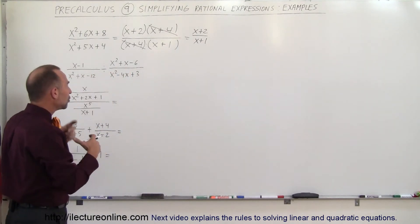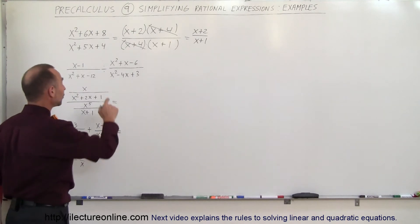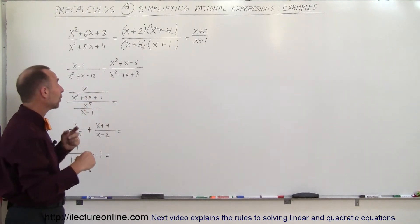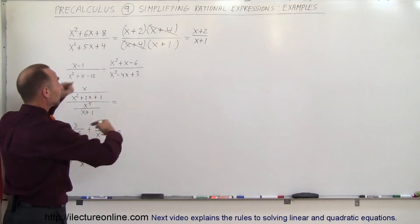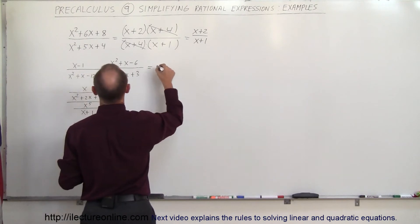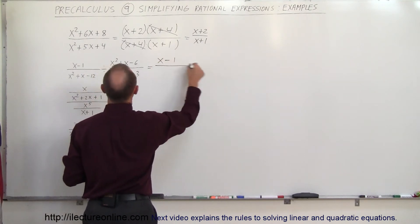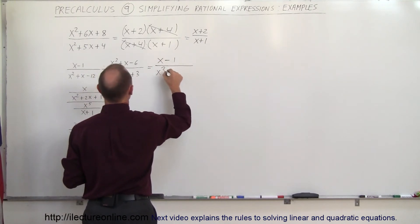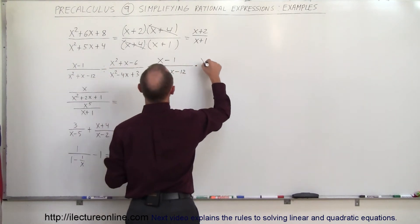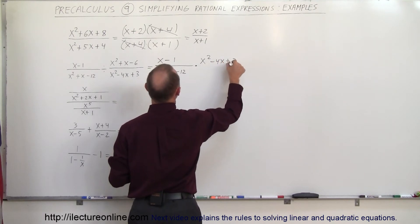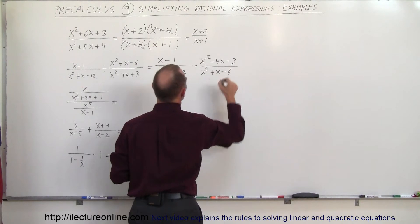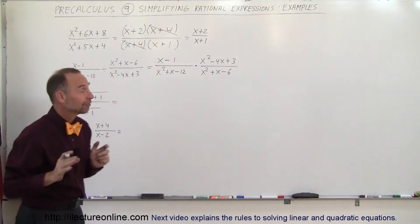On the next one, we'll use a similar technique, but first I want to get rid of this division symbol. I'm going to turn it into a multiplication by switching the second fraction around — by taking the inverse of the second fraction. So this can be written as x minus 1 divided by x squared plus x minus 12, times the inverse, which is x squared minus 4x plus 3 divided by x squared plus x minus 6. Now I'm going to factor.